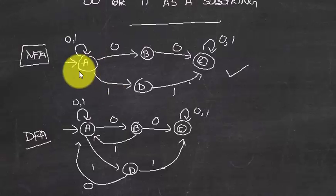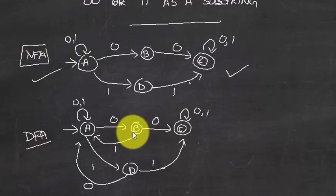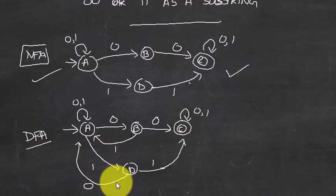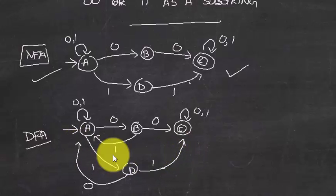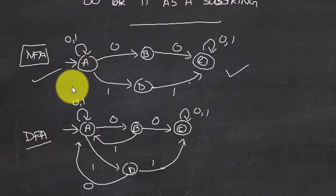In a DFA version of this problem, you would also have to handle what happens if you encounter a 'one' in the middle of looking for zeros — you would have to return to the start state and search again for two consecutive zeros or two consecutive ones. In this way, NFA is a more generalized format and DFA is a more specialized format that considers all possibilities.